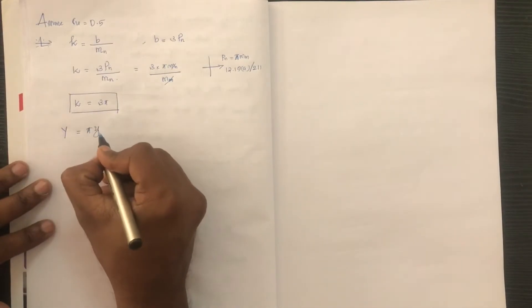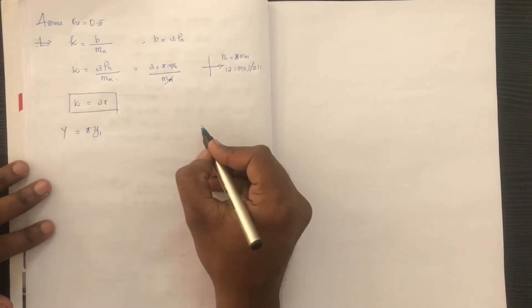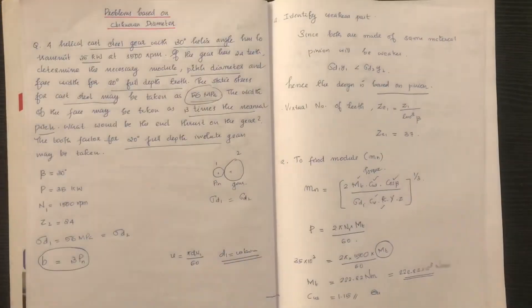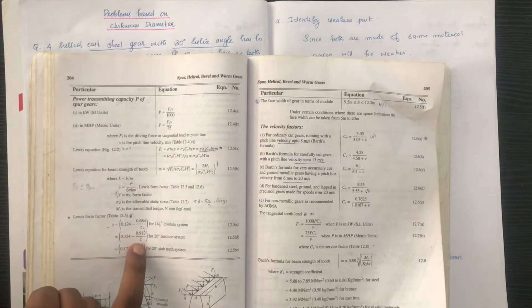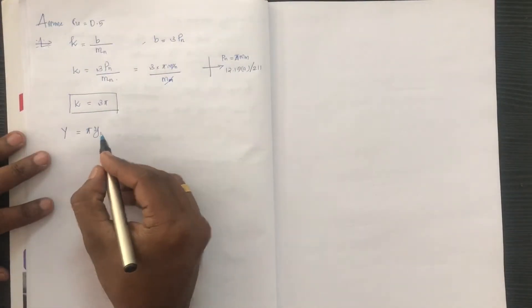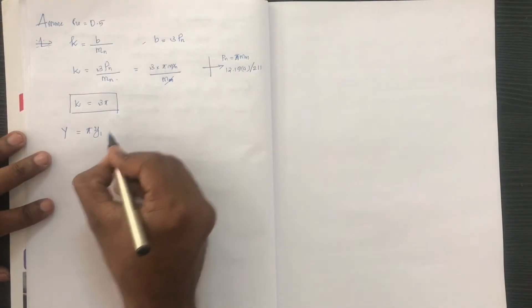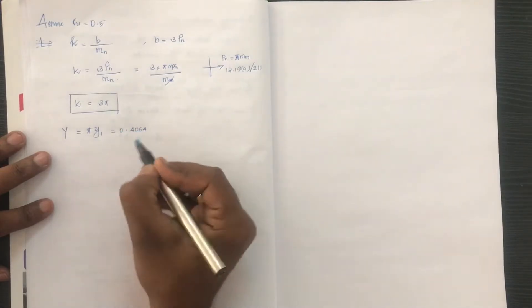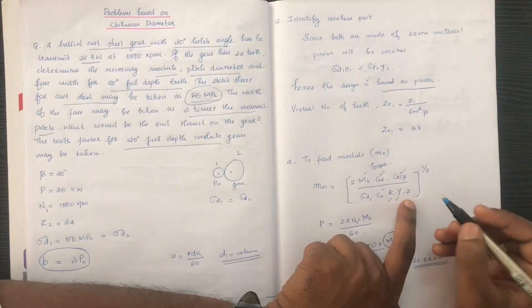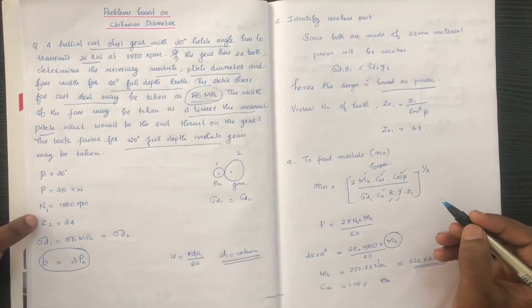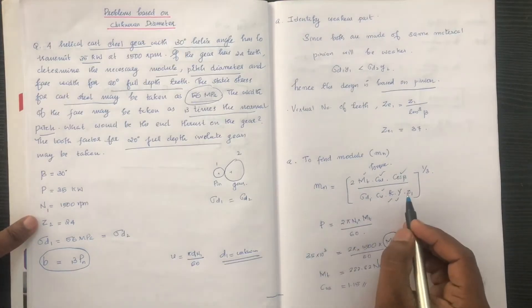Capital Y is equal to pi into small y1. The value of y1 for the pinion is 0.4064, based on Z1 = 24 teeth.